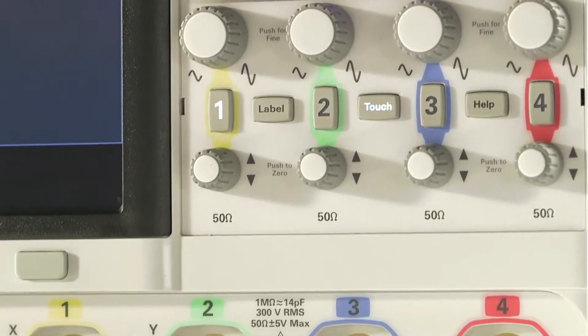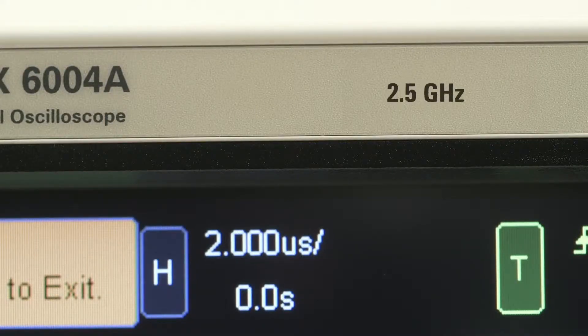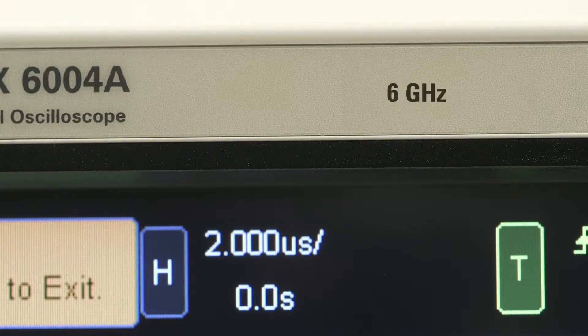You can choose either 2 or 4 channels. Bandwidths start at 1 GHz, and you can instantly upgrade it anytime with bandwidths of 2.5, 4, and 6 GHz.